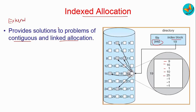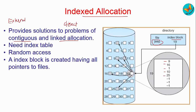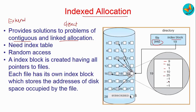An index table is maintained, as shown here, which easily enables random access — which was not possible in linked allocation. The index block consists of all the pointers to the file's disk locations, and each file has its own index block storing the addresses of the disk space it occupies. The directory consists of the addresses of the index blocks of the files, so for multiple files on a hard disk, each file gets its own index block stored within the directory.